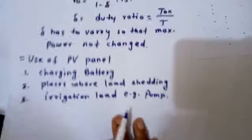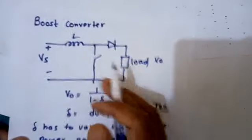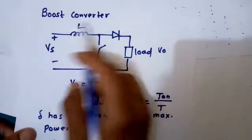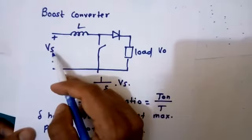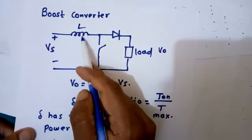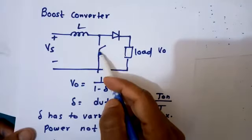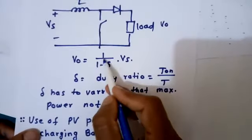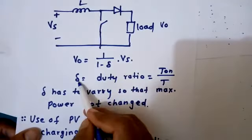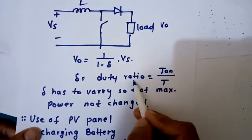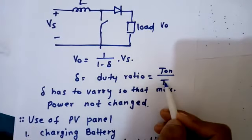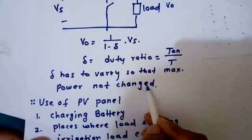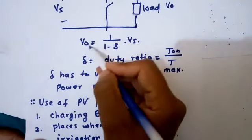Similarly, the boost converter is also used for maximum power point tracking of solar panels. For that purpose, in the boost converter, the load voltage is always more than the source voltage. The inductor, diode, and switch are connected in this configuration. Output voltage will always equal 1 upon 1 minus delta times VS. Delta is the duty ratio, and duty ratio equals Ton by T. Here we can see delta has to vary so that maximum power is not changed. By changing delta, we can change the output voltage.